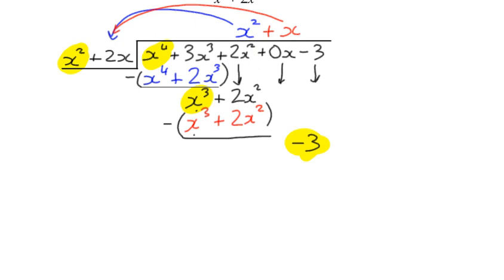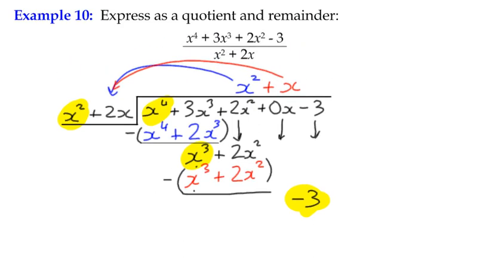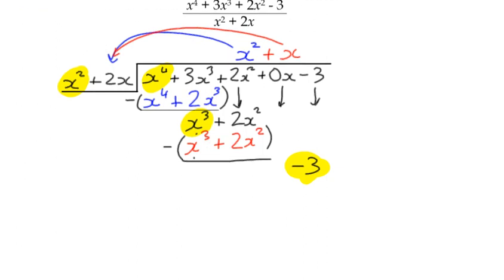And you can see why if we hadn't put the 0x in there, we would have had room for the two terms. But it just keeps it all in order if you add in the missing parameters. Now, interestingly, we've got a negative remainder. So I just want to make a little point here.